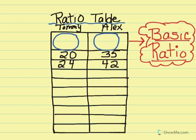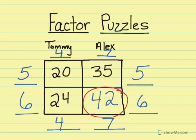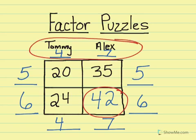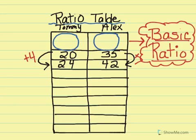Remember, with the ratio table we're going to have a constant rate on each side. Here I can see that we're increasing by 4 on Tommy's side and by 7 on Alex's side. If I go back to my factor puzzle, right here on the top, I can see Tommy has 4 and Alex has 7. So we can look right here to find our basic ratio, and I'm going to fill that in.